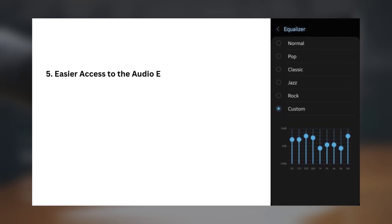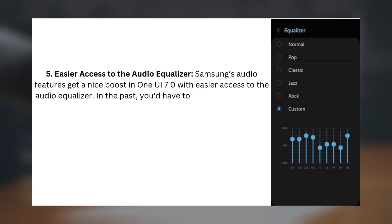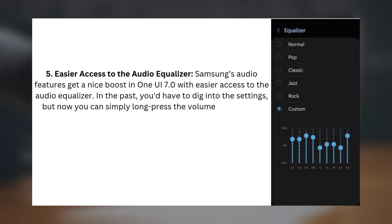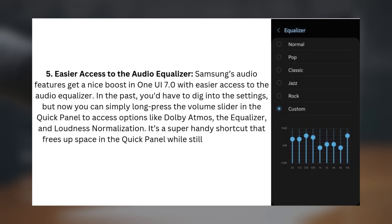Number five: easier access to the audio equalizer. Samsung's audio features get a nice boost in One UI 7.0 with easier access to the audio equalizer. In the past, you'd have to dig into the settings, but now you can simply long-press the volume slider in the quick panel to access options like Dolby Atmos, the equalizer, and loudness normalization. It's a super handy shortcut that frees up space in the quick panel while still giving you easy access to all your audio settings.